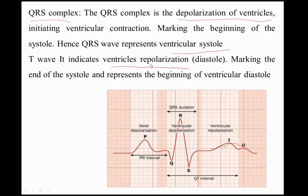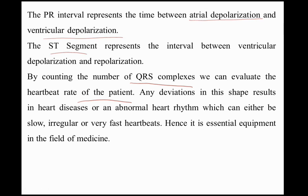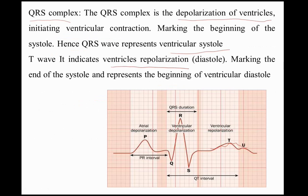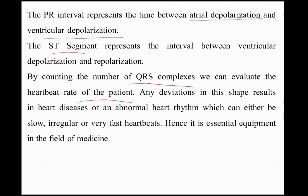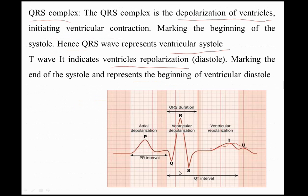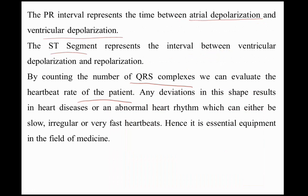The T wave represents ventricular repolarization, or diastole — it marks the end of systole and the beginning of ventricular diastole. The PR interval is the time gap between atrial depolarization and ventricular depolarization. The ST segment represents the interval between ventricular depolarization and repolarization — it represents the time gap between repolarization and depolarization.